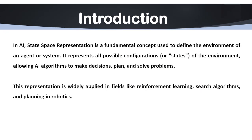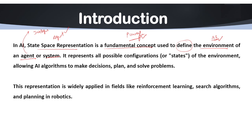As you can see here, in AI, state space representation is a fundamental concept that is basically used to define the environment — the AI environment of any agent or any system. Specifically, when we talk about state space representation, we always talk about intelligent agents or intelligent systems. State space representation is a very powerful AI tool because it can easily structure problems in a way that is computationally manageable, goal-oriented, and adaptable to complex and uncertain environments.